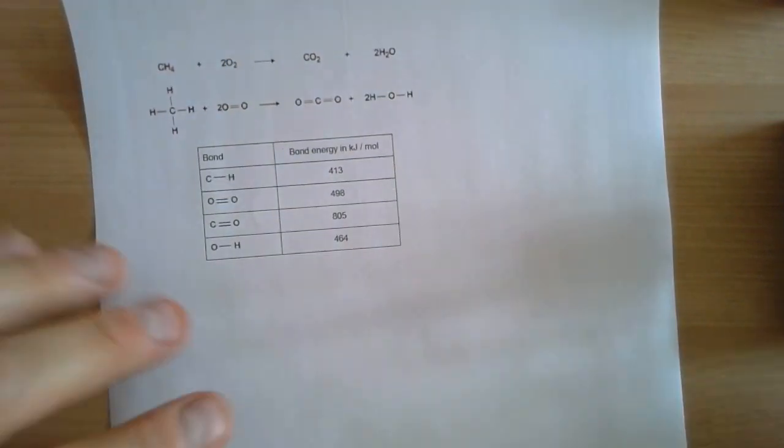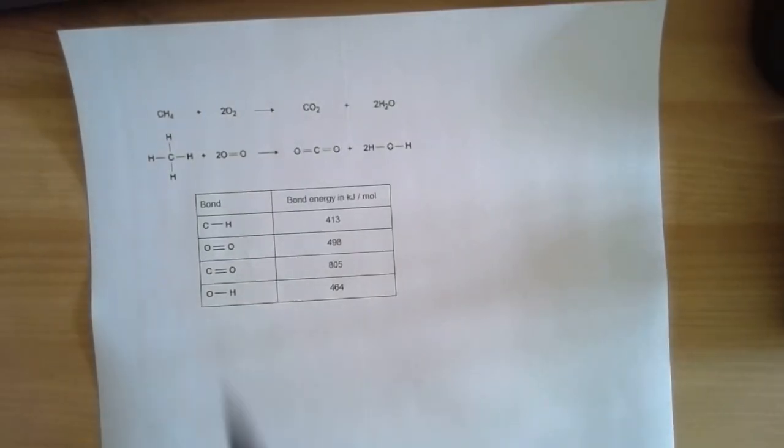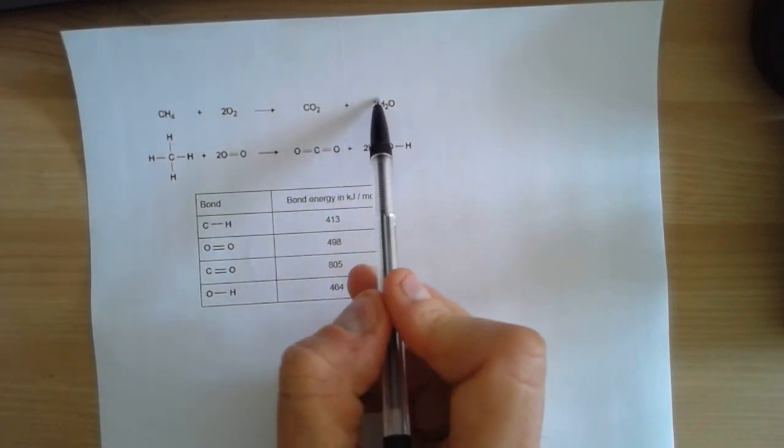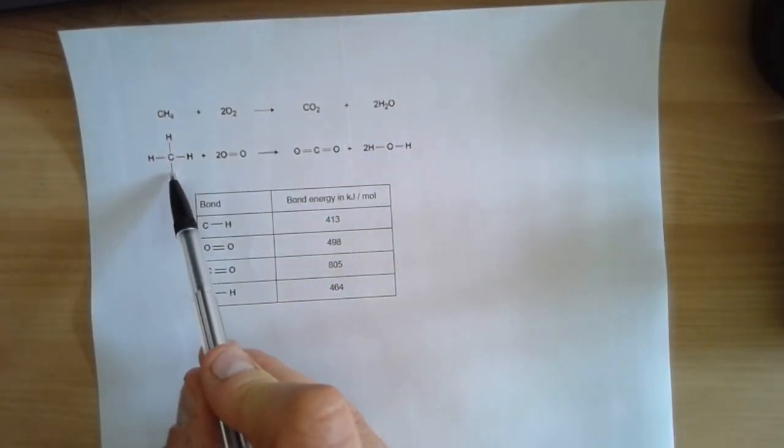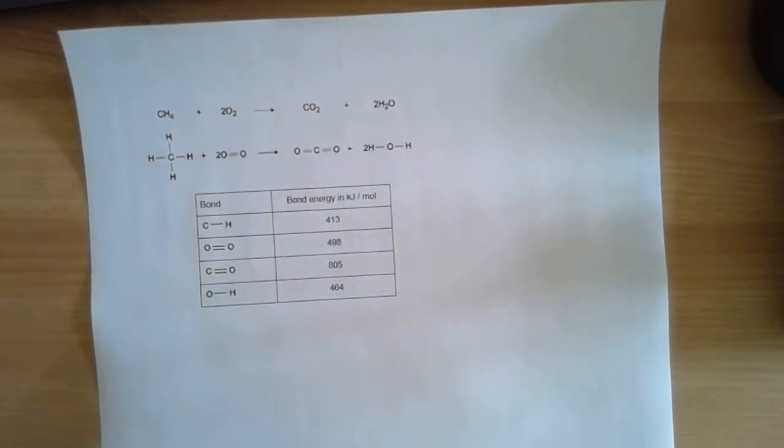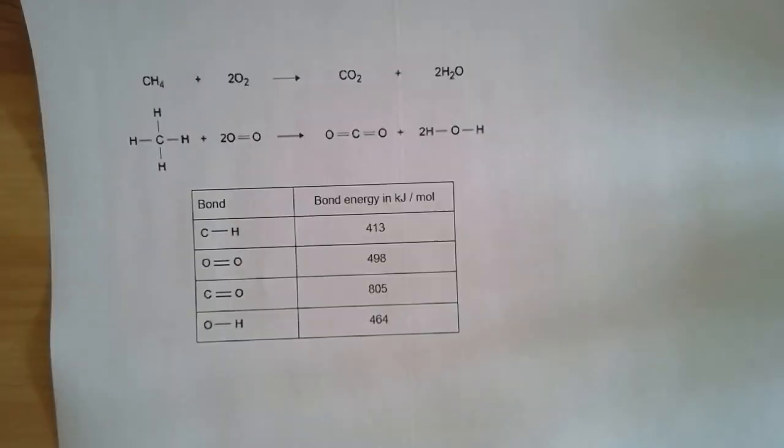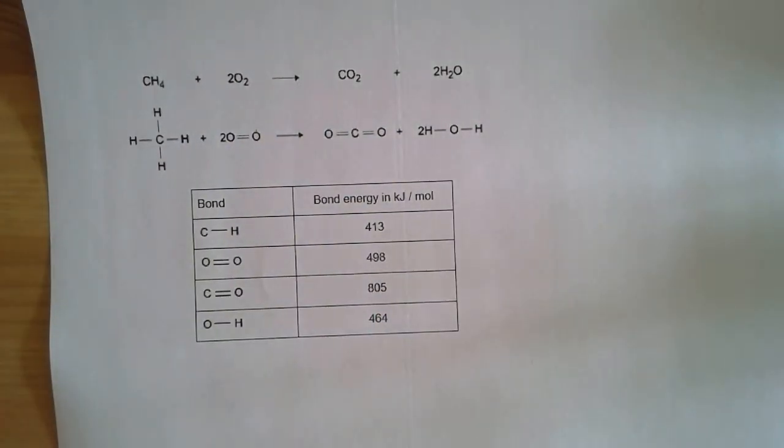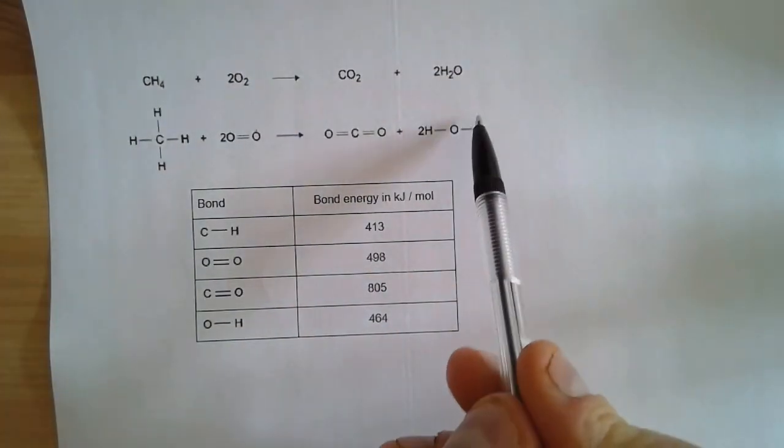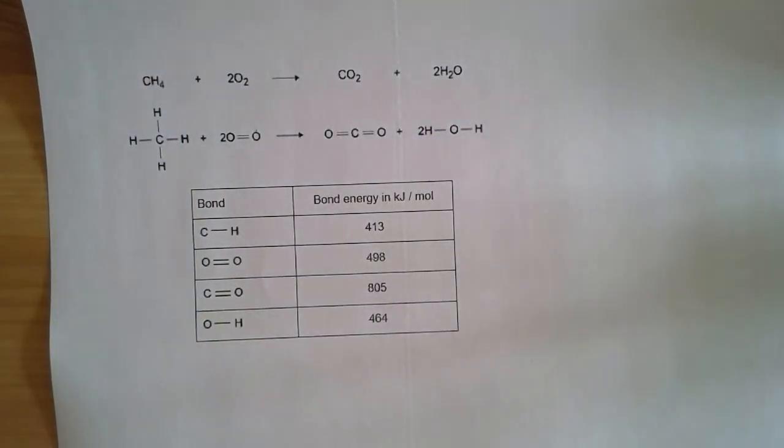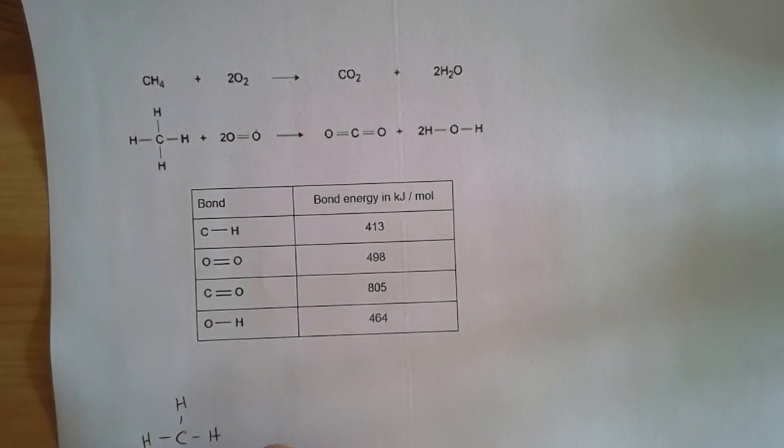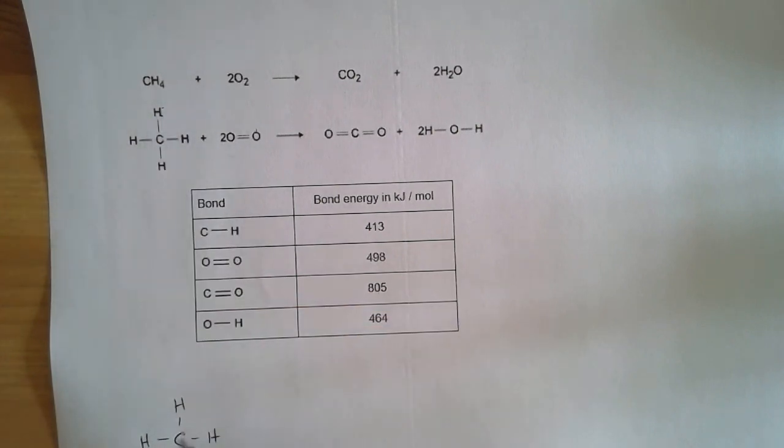So here's my example. We've got the equation for a chemical reaction here and we've also got the bonds drawn out for us here. So before we actually start the calculation, I'm just going to get us to think about what this means and draw it out a little bit fuller than perhaps it's given to us here. So don't forget, here's the equation and here's the bonds drawn out, don't worry about the table for now.